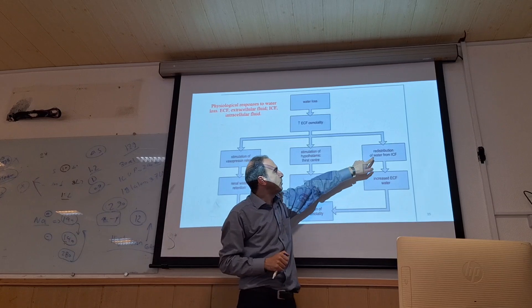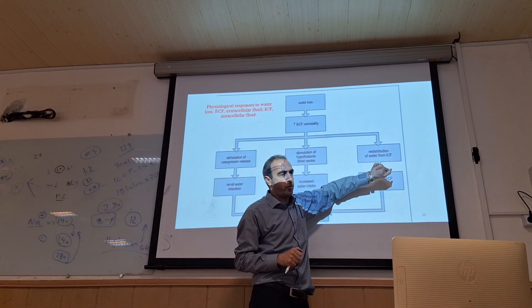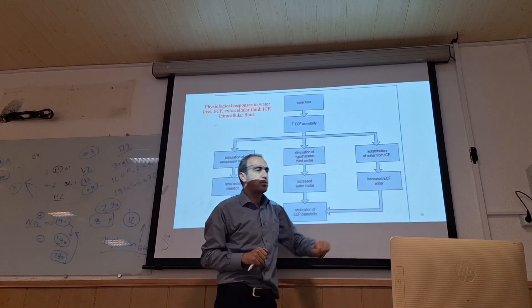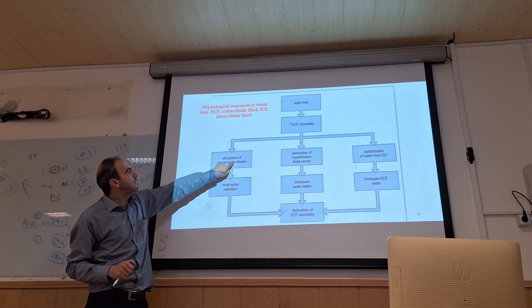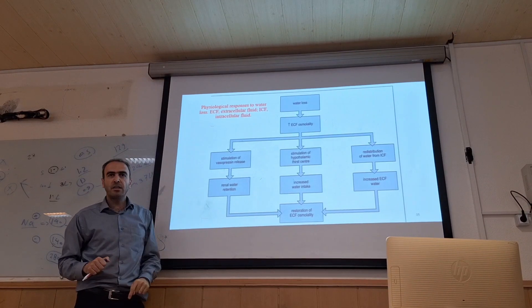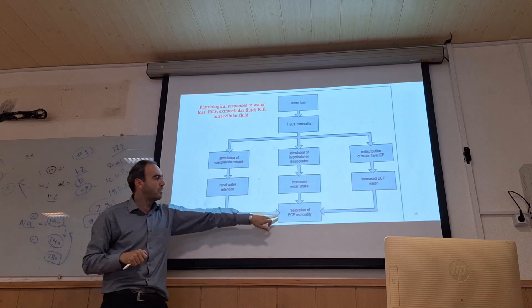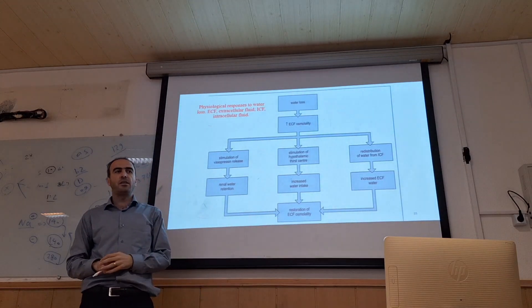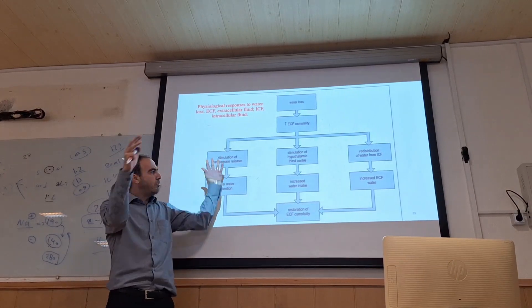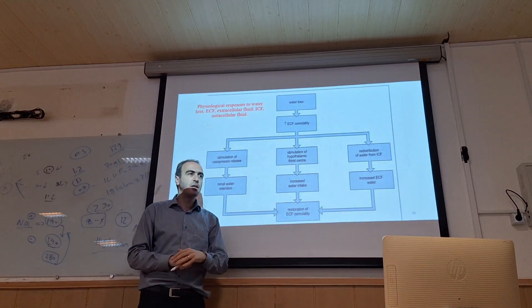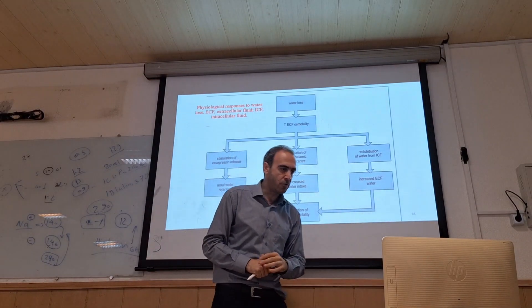In addition to the hypothalamic thirst response, there is redistribution of water from intracellular fluid, increasing extracellular water to re-establish balance. There is also stimulation of vasopressin (ADH) release, leading to renal water retention, which re-establishes ECF osmolality. So when we have water losing, we have a three-part mechanism to increase water and re-establish ECF osmolality.